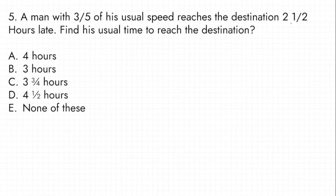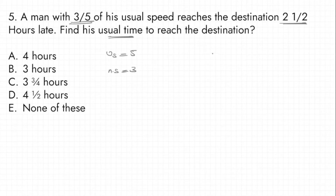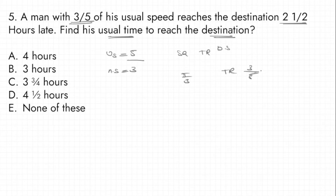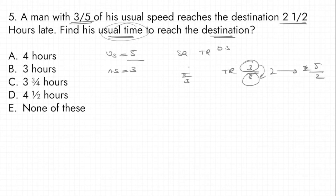Problem: A man walks at 3/5 of his usual speed and reaches the destination 2.5 hours later. Find his usual time to reach the destination. The usual speed is 5 parts, and the new speed is 3 parts. Speed ratio is 5:3, so the time ratio is 3:5.